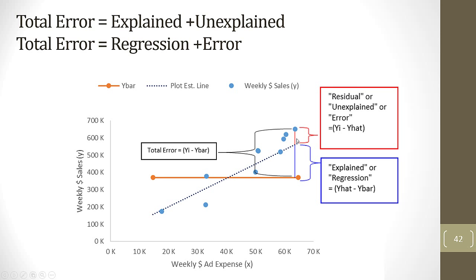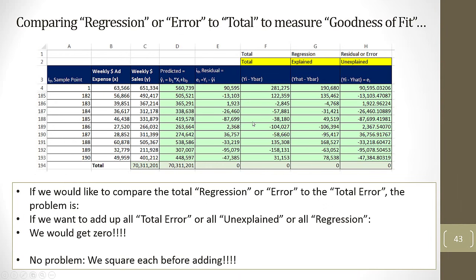We'd like to add up all the blue lines for every single point, and do the same for the residuals, so we can compare those two parts to the total and get what percentage is explained by using the equation and which part is not explained. But if we add up all the residuals, we get 0. If we add up all the regression amounts, we get 0 too. So just like with standard deviation, we square the values and then add them up.